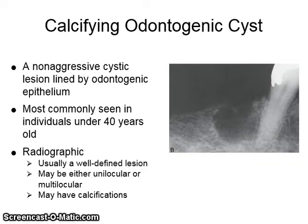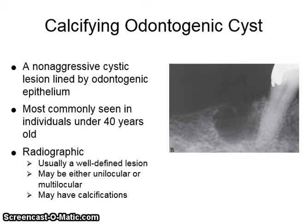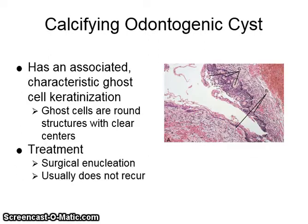A calcifying odontogenic cyst is a non-aggressive cystic lesion lined by odontogenic epithelium, most commonly seen in individuals under 40 years of age. Radiographically, it shows as a well-defined lesion that may be unilocular or multilocular and may also have calcifications. Microscopically, it has a characteristic ghost cell keratinization — ghost cells are round structures with clear centers. It is treated by surgical enucleation and usually does not recur.